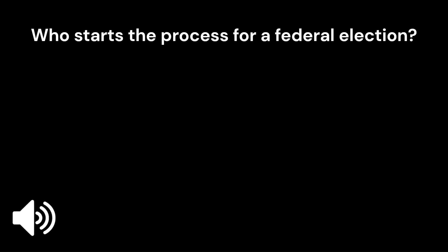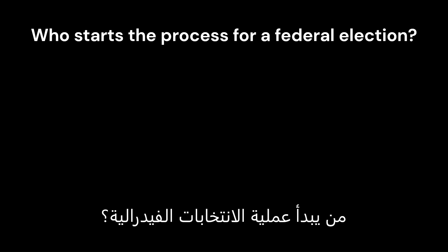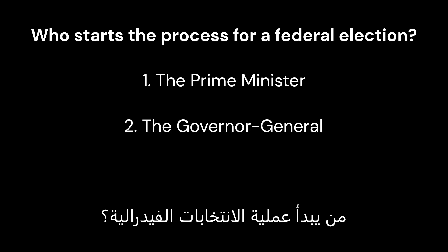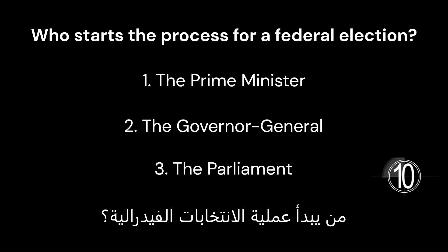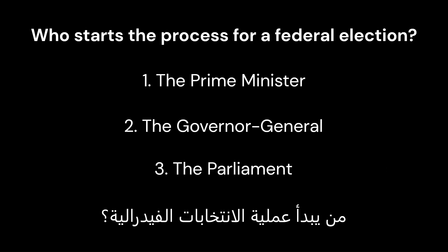Who starts the process for a federal election? 1. The Prime Minister. 2. The Governor General. 3. The Parliament. The correct answer is 2. The Governor General.